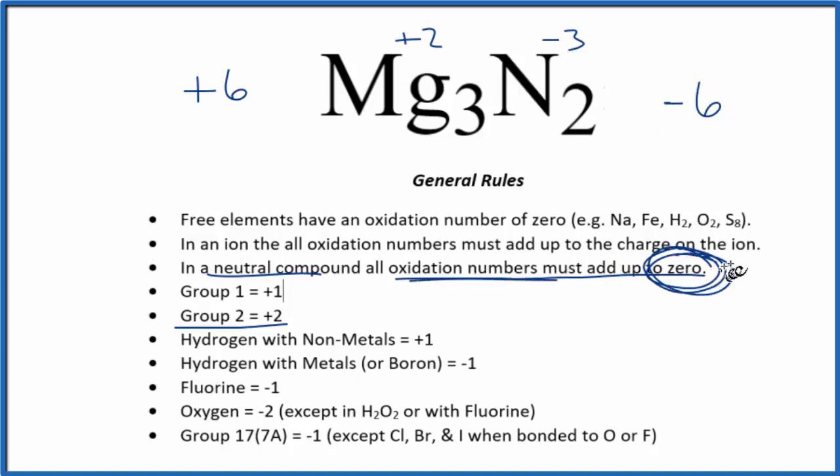The oxidation numbers add up to zero, we have a neutral compound. So each magnesium atom has a +2 oxidation number, and each nitrogen atom has a -3.